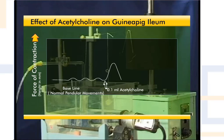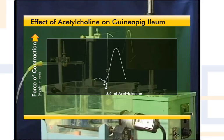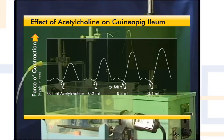Repeat the procedure using 0.2, 0.3, and 0.4 ml of acetylcholine solution. For recording of every response, a 5-minute time cycle is followed. Now measure the height of each response in millimetres. Please note that the height of the response is indicative of ileum contraction. You shall observe that with increasing doses of acetylcholine, contraction of the ileum also increases.